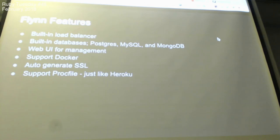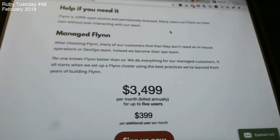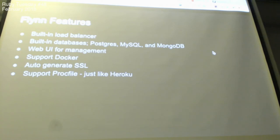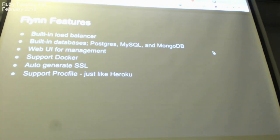So Flim features. First, they have built-in load balancers — you don't have to attach elastic load balancers or manage your own. Second, they have built-in database tools — you can provision your own database. They support three databases now: Postgres, MySQL, and MongoDB. You just click a UI button and they provision the database for you inside your own cluster, not inside RDS.